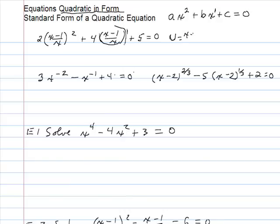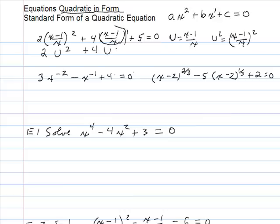So I'll say u is equal to x minus 1 over x, and if that's u, then u squared would just be that number squared: (x minus 1 over x) squared. So if I see an expression (x minus 1 over x) squared, I can just replace it with u squared. If I see an expression x minus 1 over x, I can just replace it with u. And now you see a nice quadratic equation in u, exactly the same form as the quadratic equation in x.